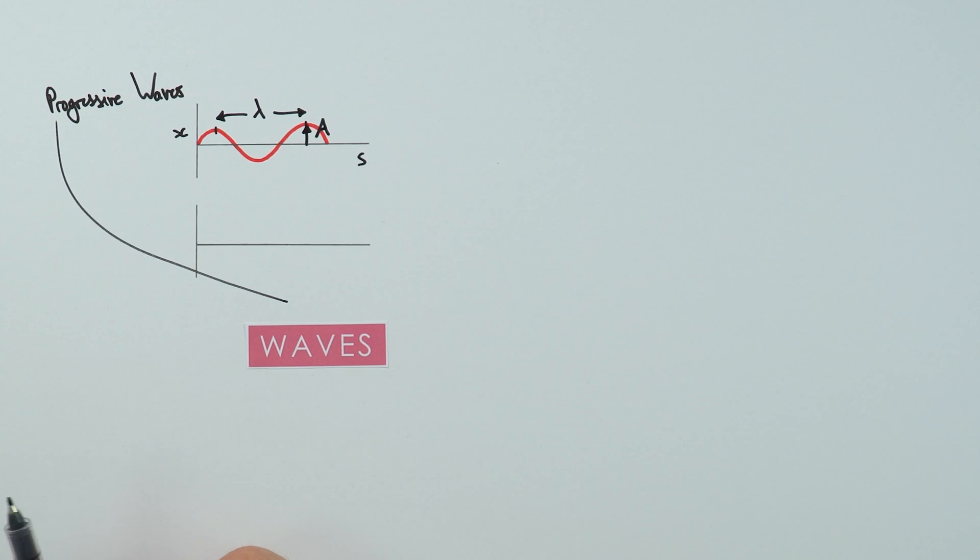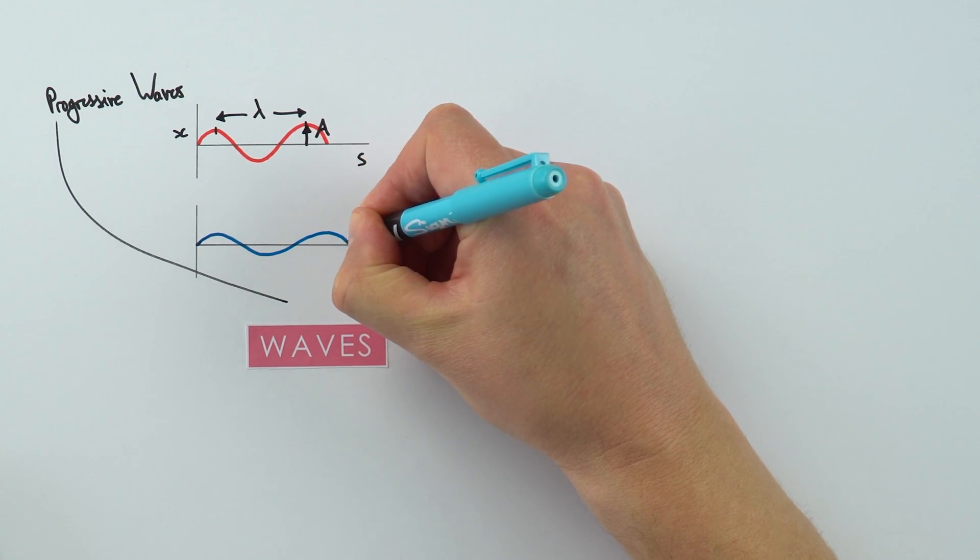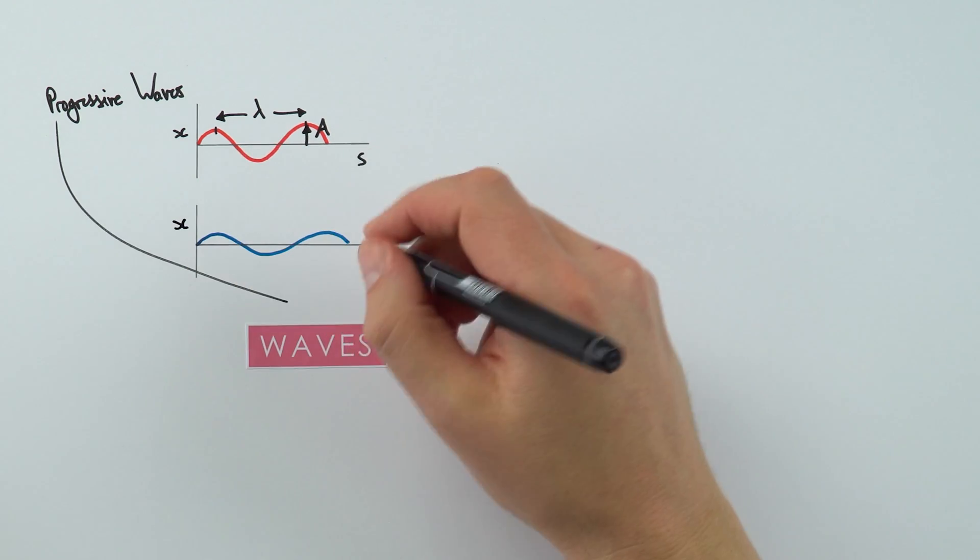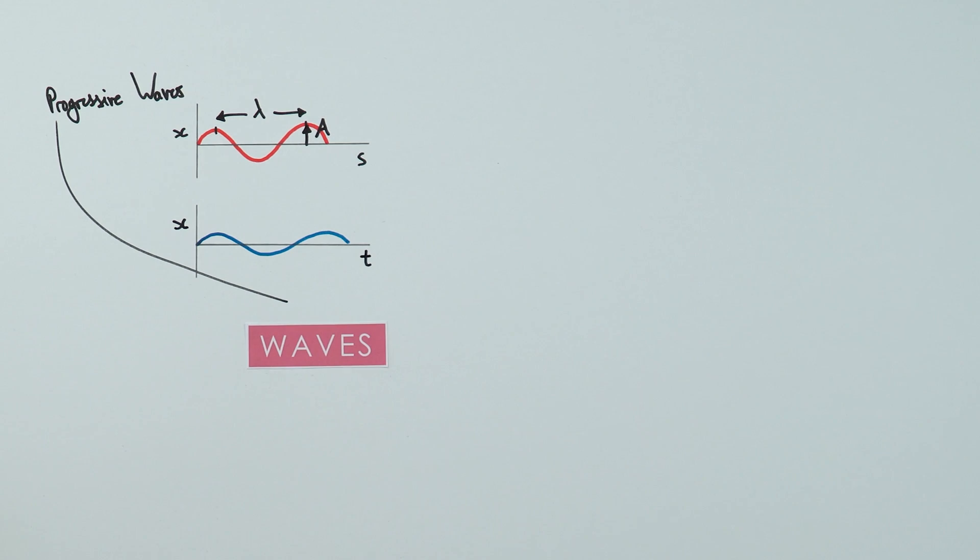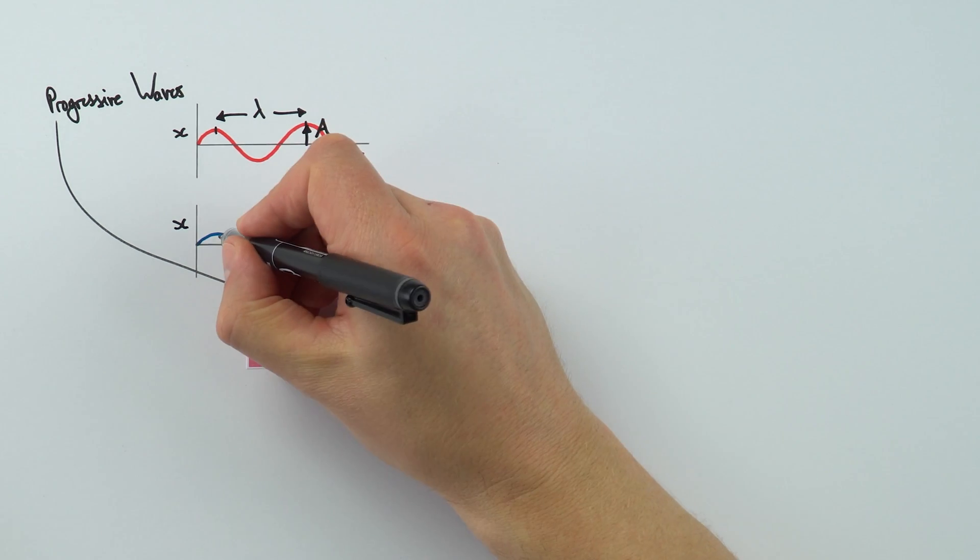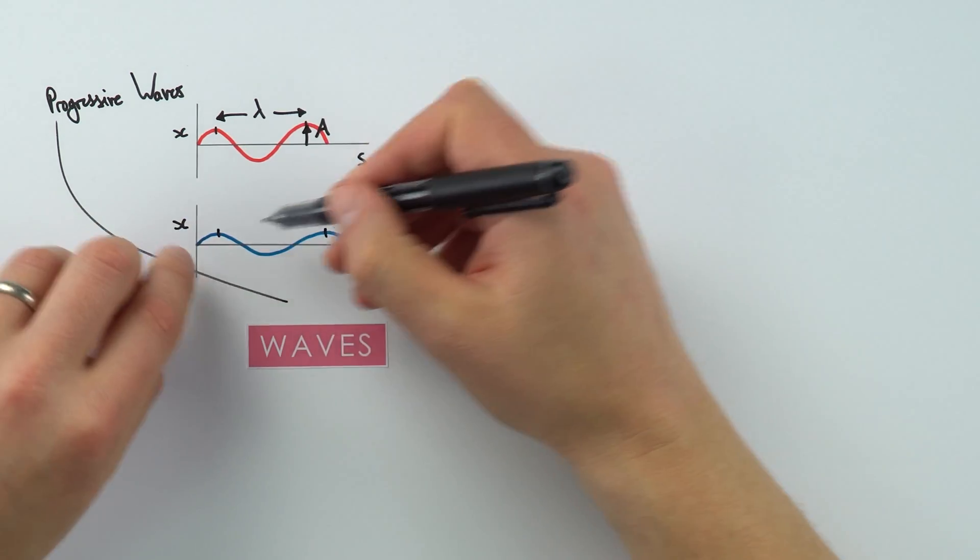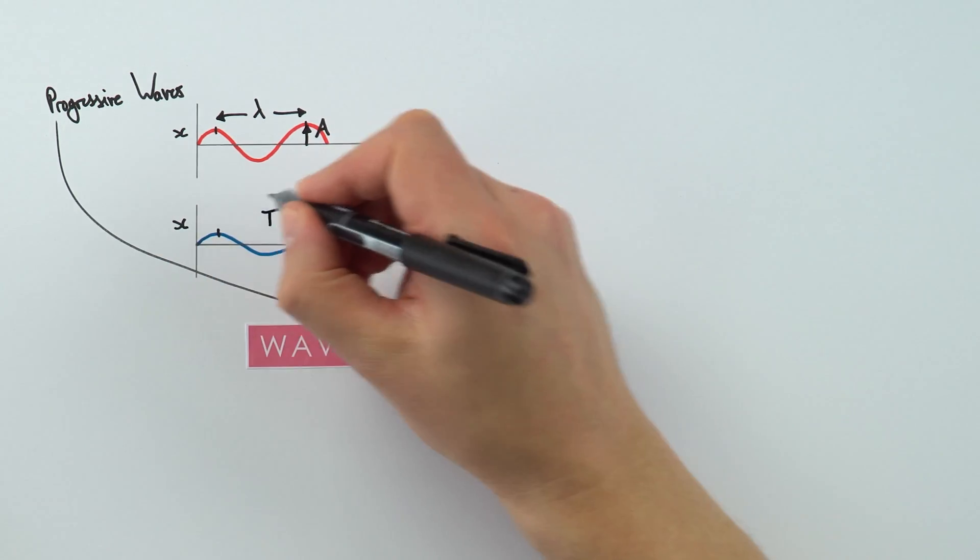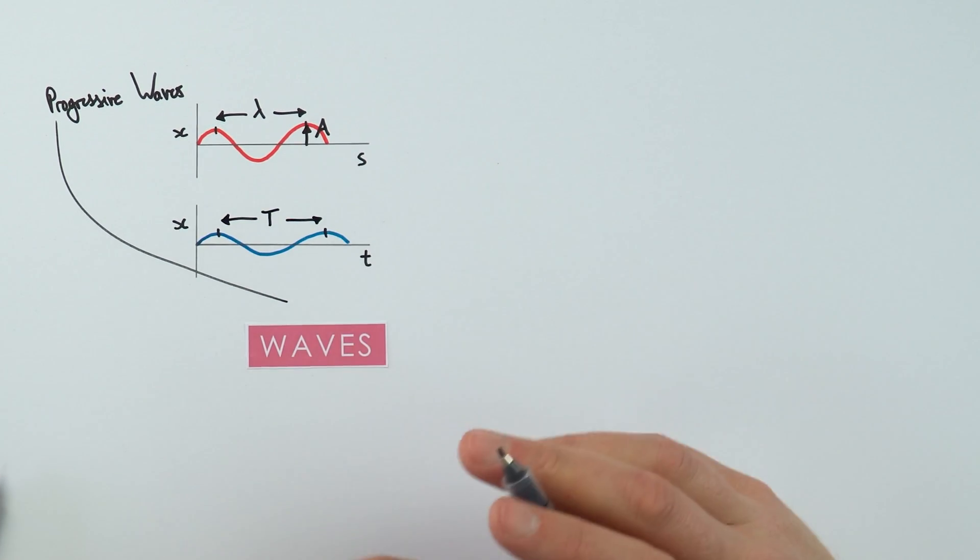The other graph that we could draw, I was going to use a different color to show it's actually a different graph. Here we have the same wave, but what we could look at is the displacement and how that varies with time. This is maybe one particular particle and how that displacement goes from positive to negative over a period of time. If we were to look at one wave cycle, going from peak to peak, trough to trough, or this point to any subsequent point one wave cycle later, this distance here I'm going to call capital T, and that stands for the time period of the wave.